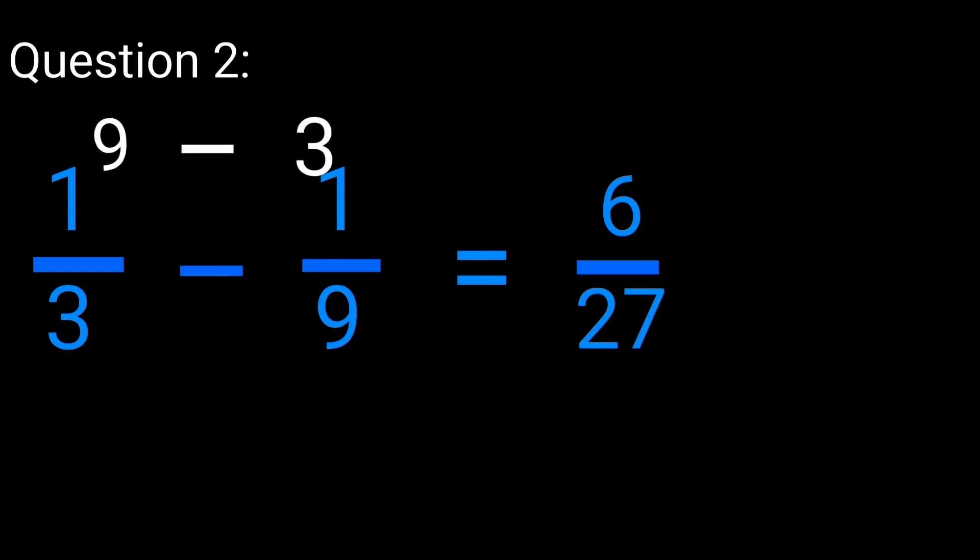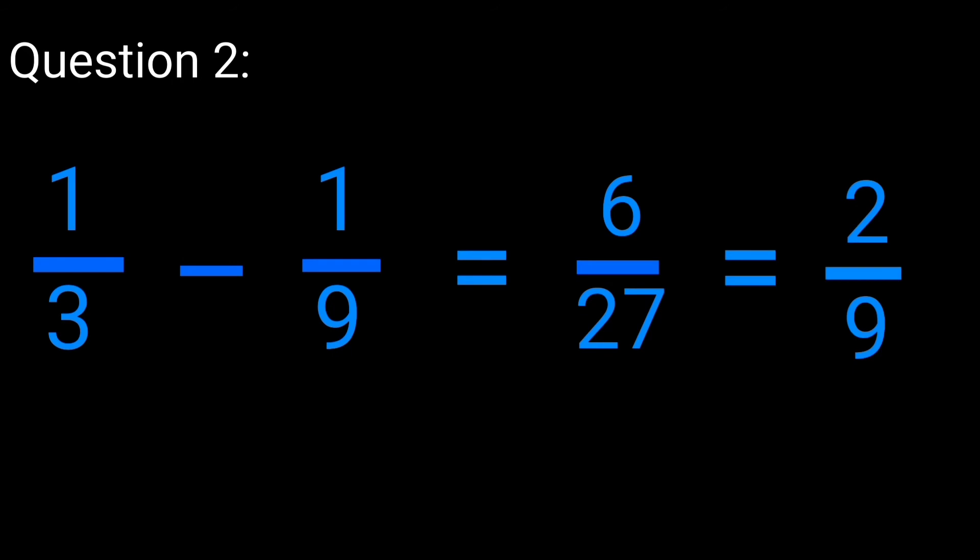Still, 6 over 27 is not yet in its simplest form, so you still have to go ahead and divide it to get the correct answer. What number is going to divide 6 and 27? The number is 3. 6 divided by 3 is going to give you 2, while 27 divided by 3 is going to give you 9. Now the correct answer to this question is 2 over 9.